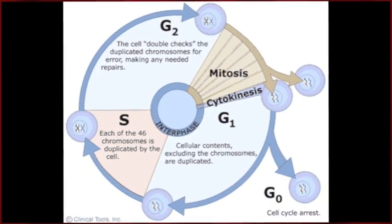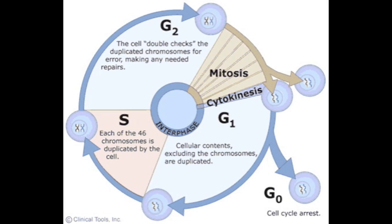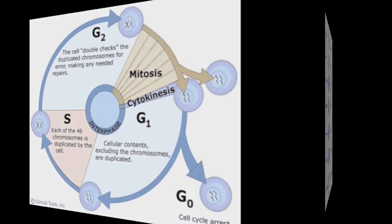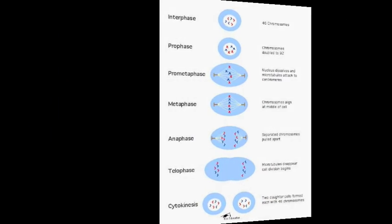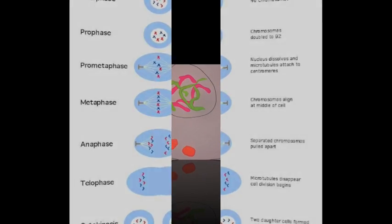Before a dividing cell enters mitosis, it undergoes a period of growth called interphase. This is the holding stage, or the stage between two successive cell divisions. In this stage, the cell replicates its genetic material and organelles in preparation for division.